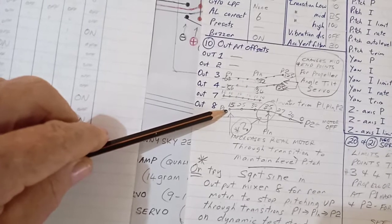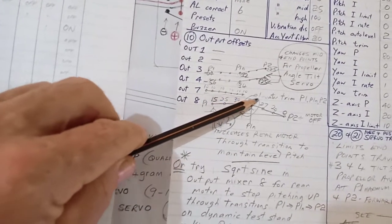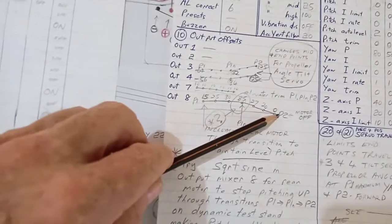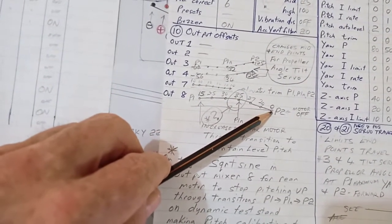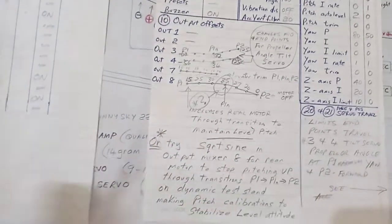P1 is for hover, and as you transition this curve might be bigger or smaller than what I've drawn there. When you get to P2 in forward flight, the motor is zero, it's off. I'll try and get that in focus.